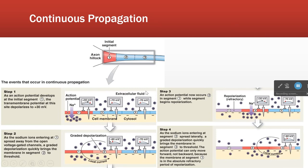Let's talk about continuous propagation first because it's easier to understand. Here we are at the axon hillock, the initial segment. We've had enough graded potential from receptor-gated channels to make a change in the membrane potential. When the region of the axon hillock — the initial segment — reaches plus 30 or whatever its threshold is, that's going to trigger the full action potential.